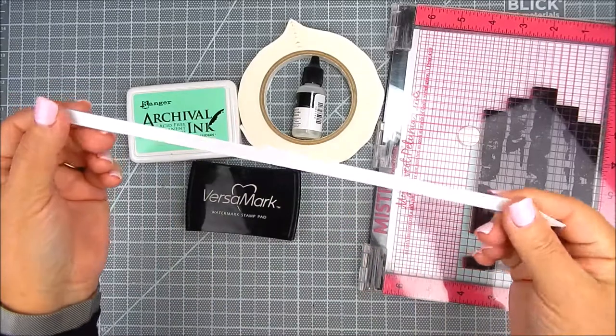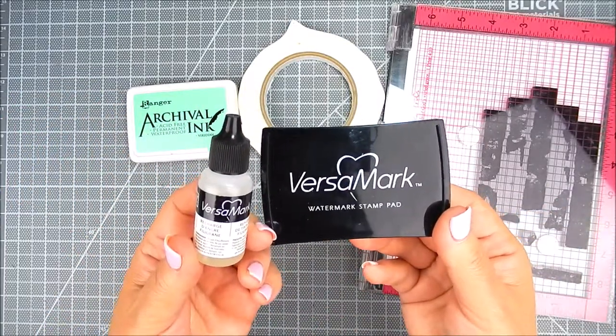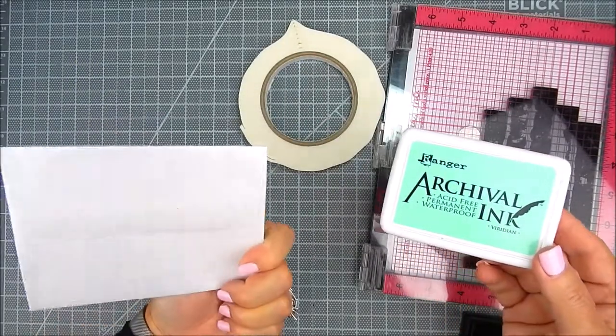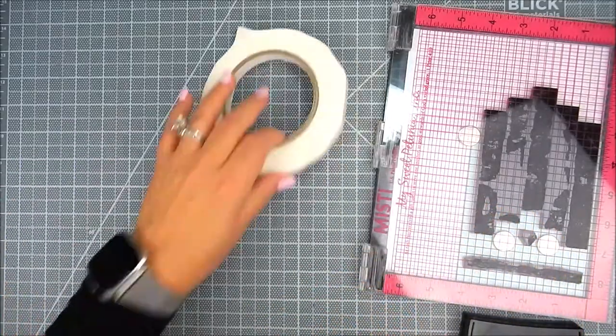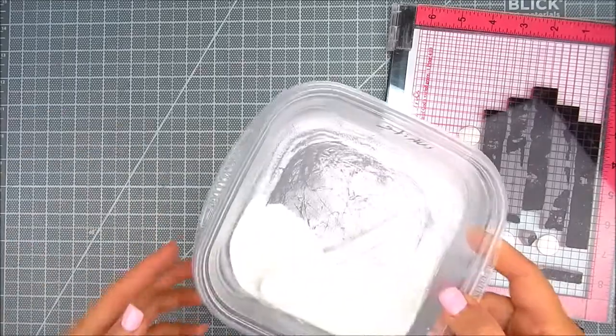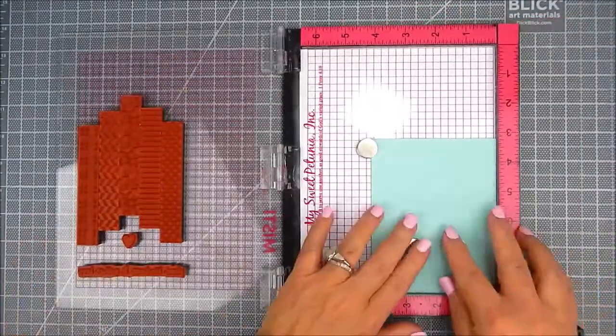I'm also using some white satin ribbon, Versamark ink and archival ink in a light green color. I'm also using an envelope that I'm going to stamp on. I have foam tape, white embossing powder, and I'm using the original MISTI for the stamping.